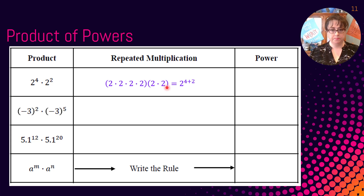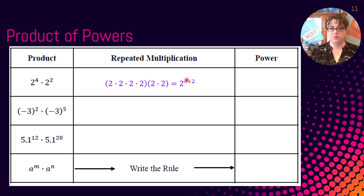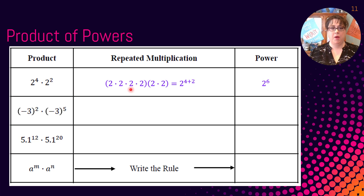So let's go ahead and write that out. When we write that, we can see we have four twos and we have two twos. So why not just put those two exponents together, because we know that we have a total of four and then another two — so four and two. And so we could say we have a total of six twos.